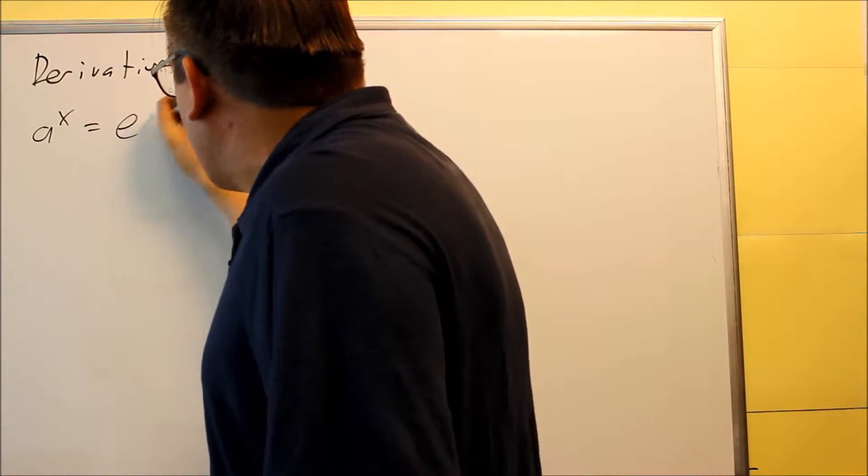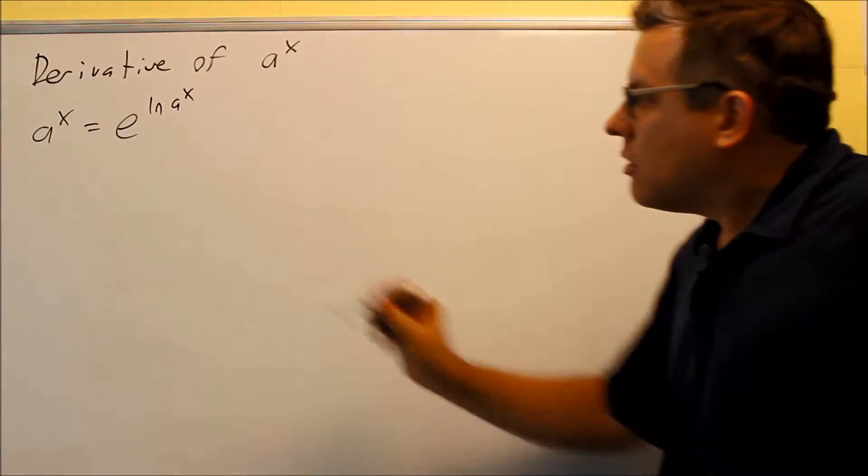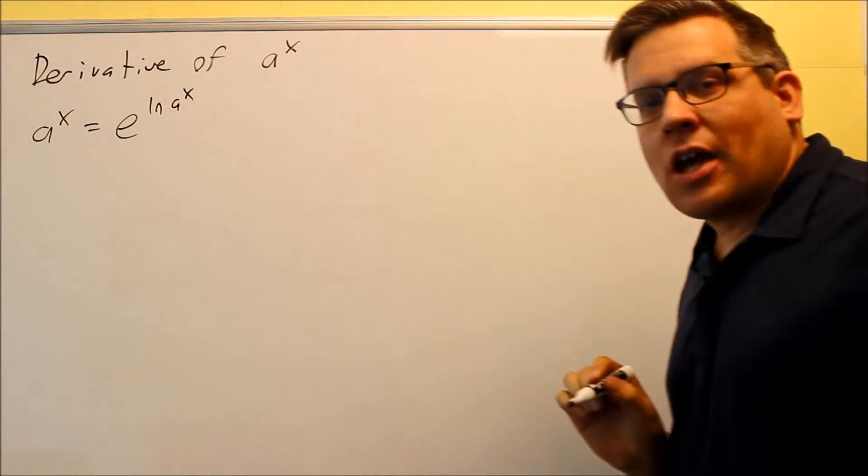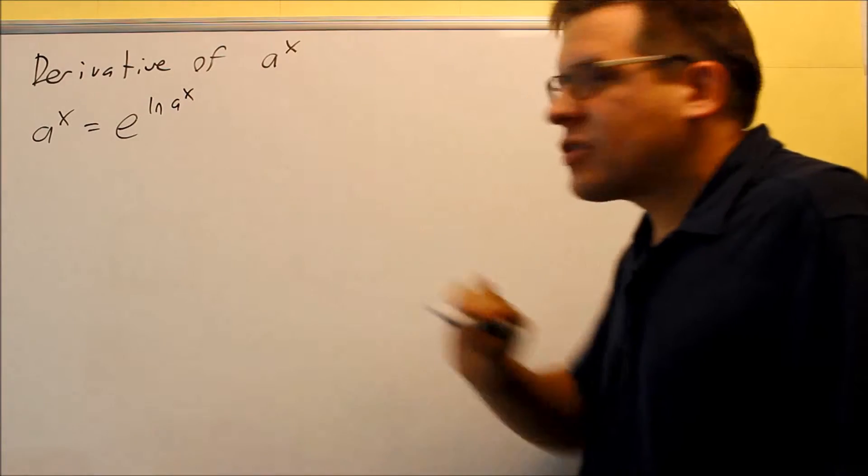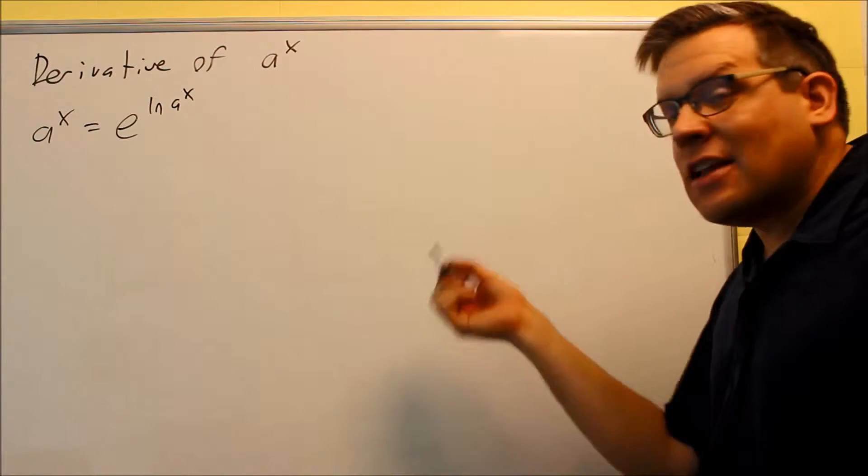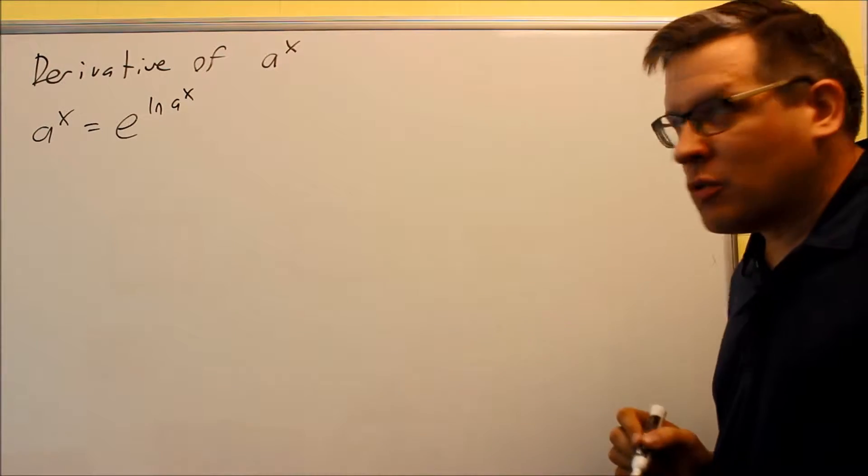So what I'm going to do here is I'm going to write it in this form, e to the ln of a to the x. So e and ln, we know that's going to cancel out, and we'll get a to the x equals a to the x. Both sides will be equal.